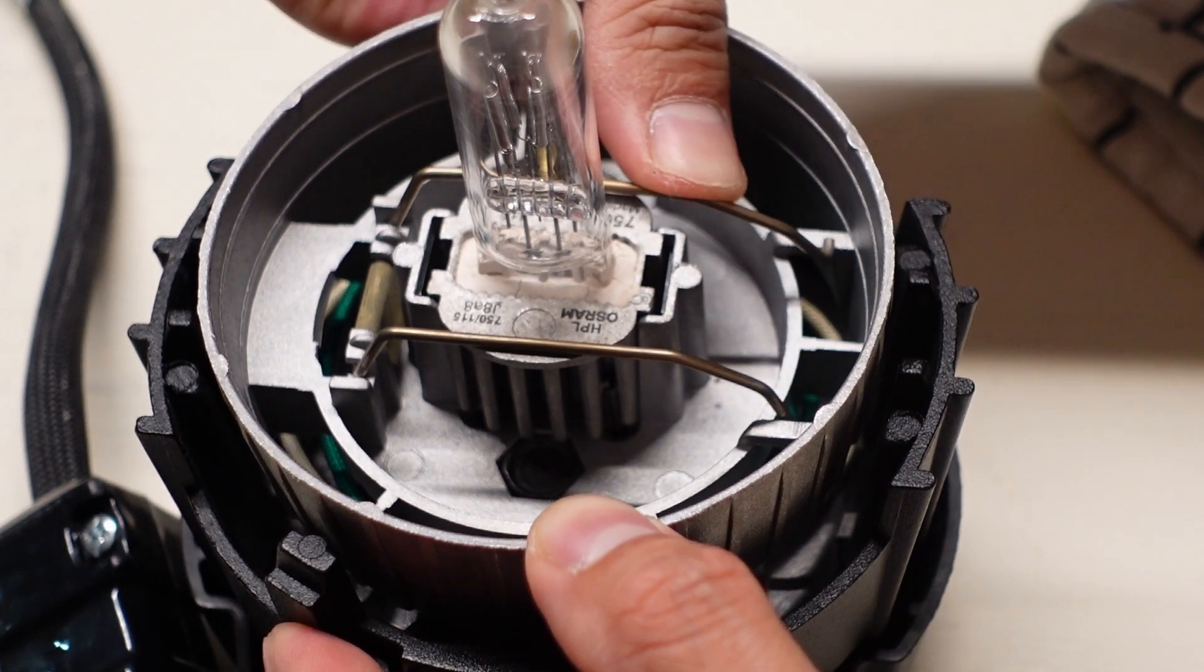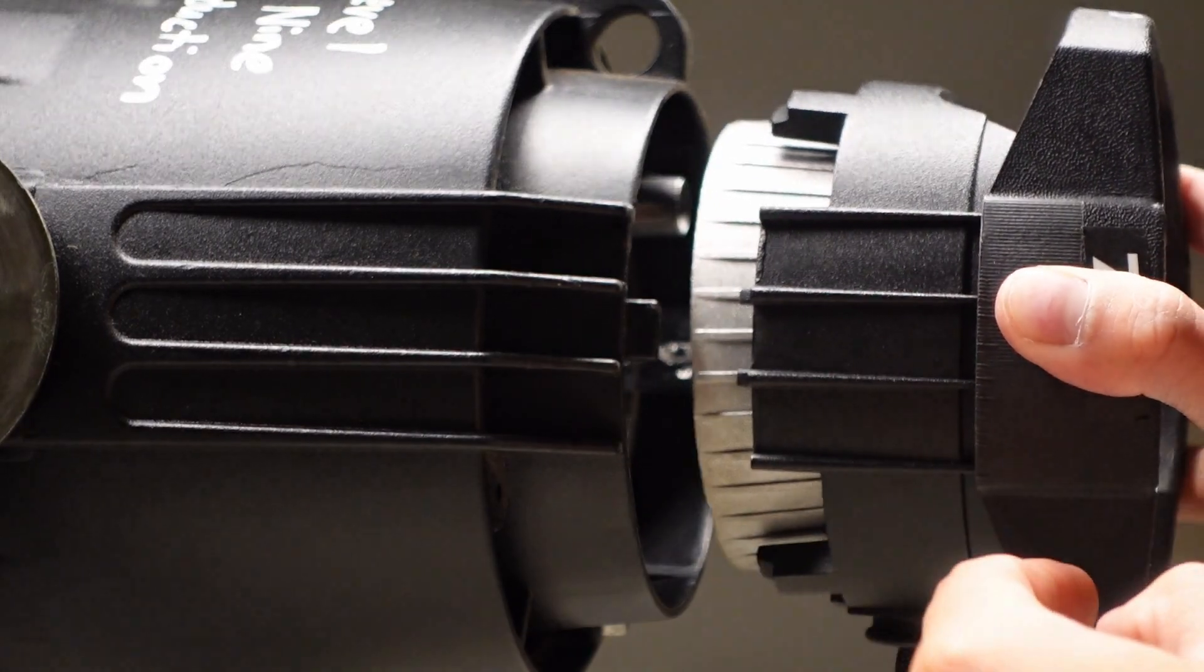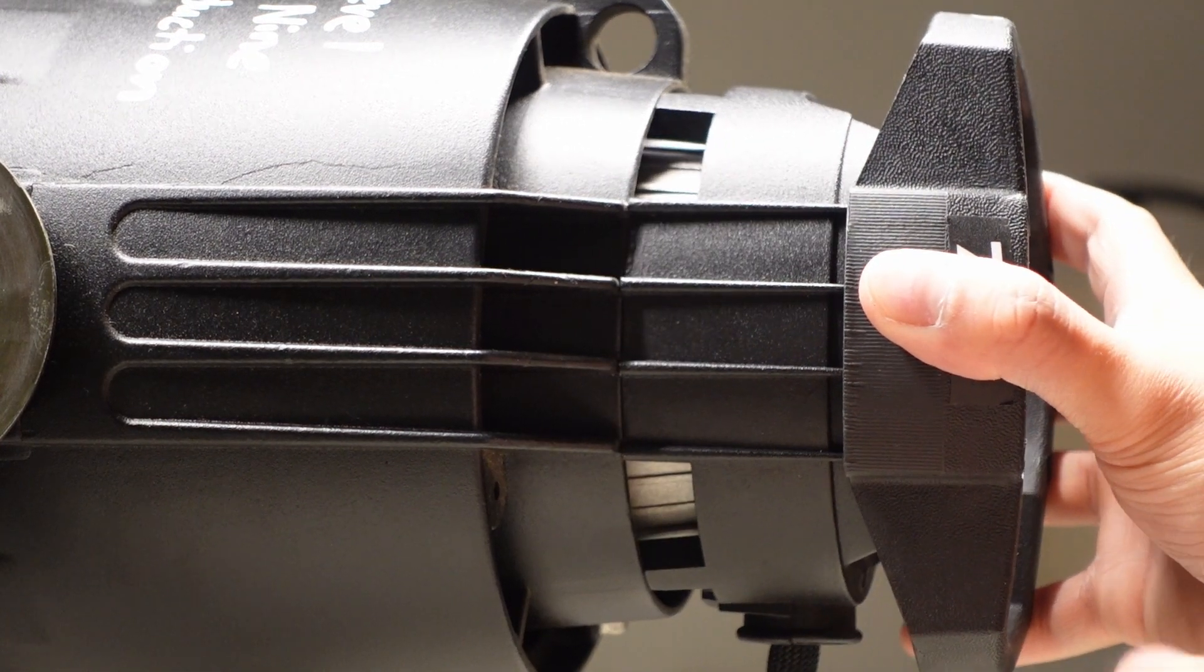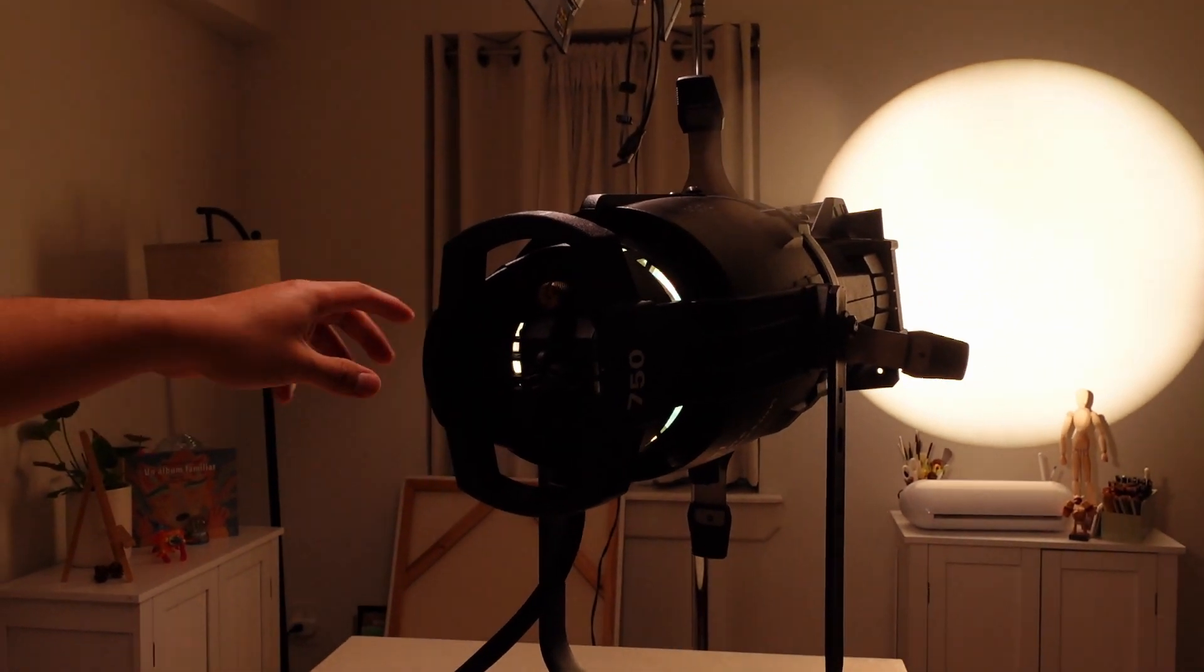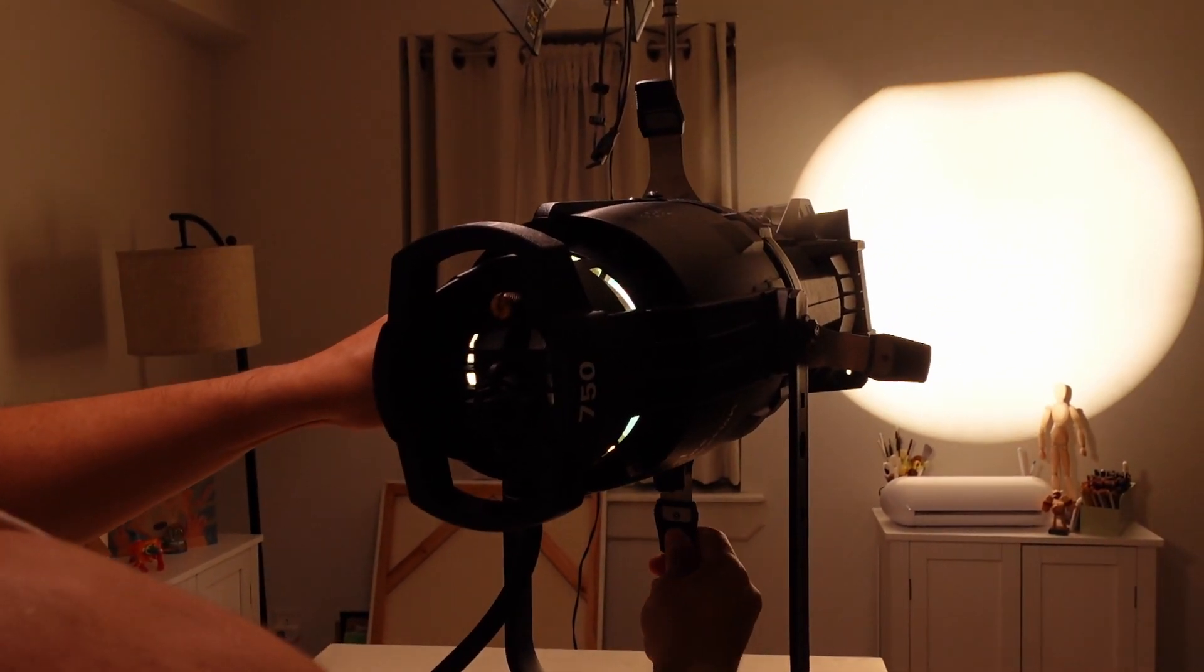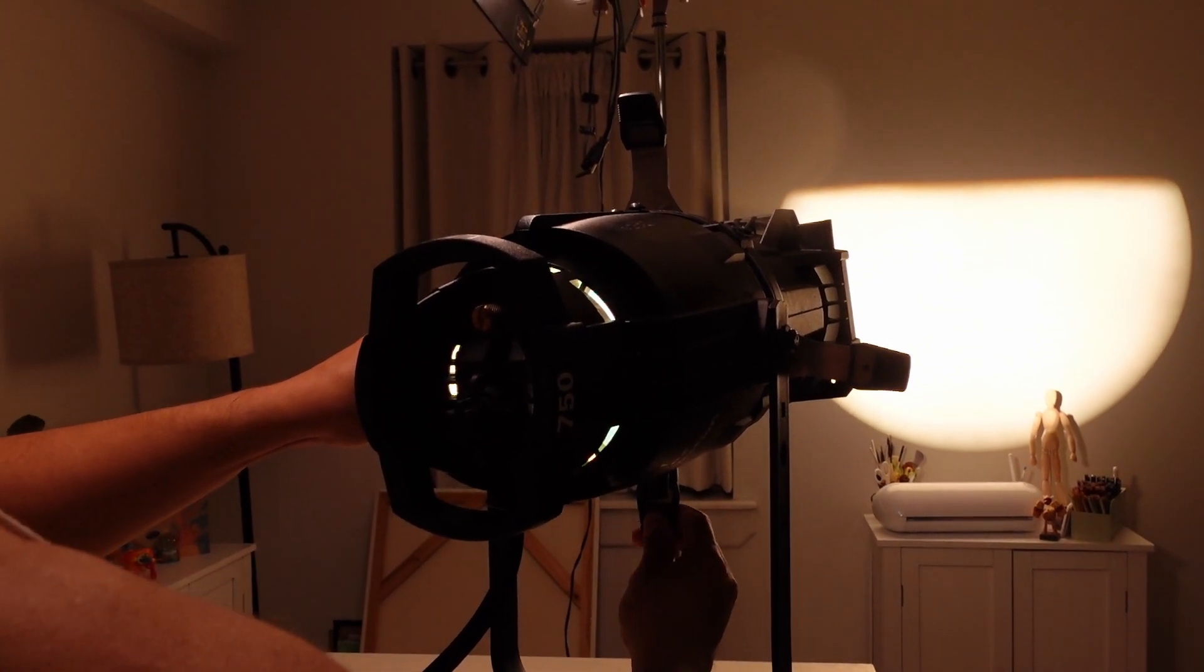To put the bulb socket back into the barrel, just have to align the screw holes and also align the sides of the barrel so that the four lines align. You also have to be careful because the Leko is a hot strike, which means there's no switch to the light, so once you plug it into power it'll turn right on.